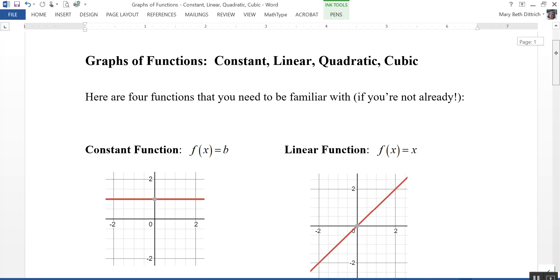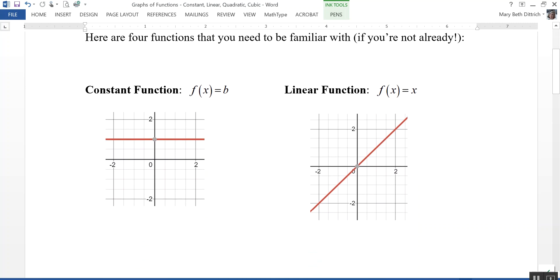The first is the constant function, represented by the equation f(x) equals b, where b is a number. In this case, this would be the equation f(x) equals 1. You'll notice that its graph is a horizontal line, and in this case it goes through the y-axis at the point y equals 1.